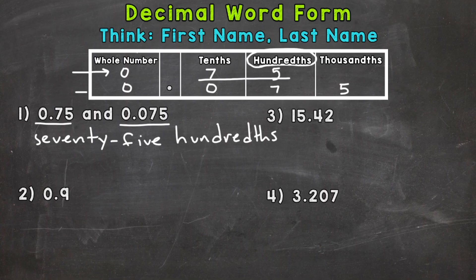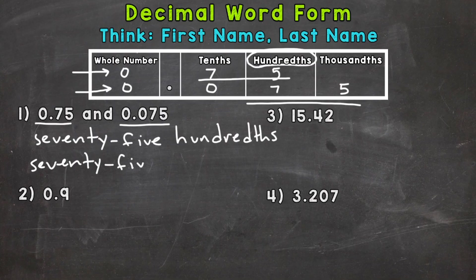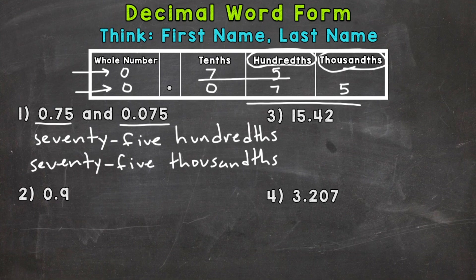The bottom example has the same exact first name — read this number as is, we have 75. But the last name is different because the bottom one ends in the thousandths place. So that's 75 thousandths. On to number two: the first name, reading the number as is, is just nine. The last name — where does that decimal end? It ends in the tenths place. So you would say nine tenths.